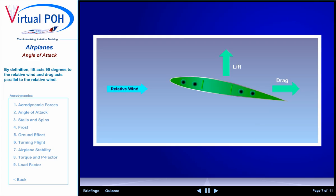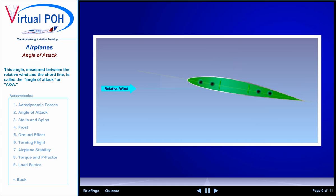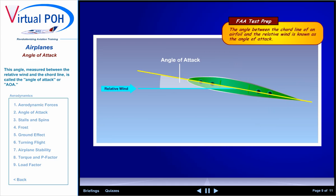Typically, an airplane will fly at an angle to the relative wind. This angle, measured between the relative wind and the cord line, is called the angle of attack or AOA.